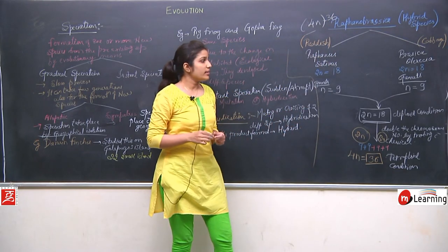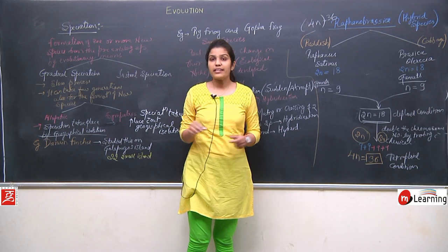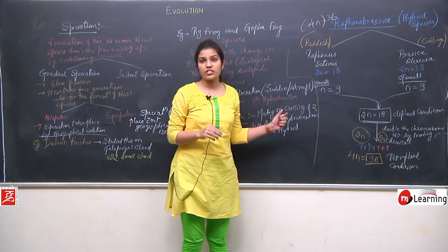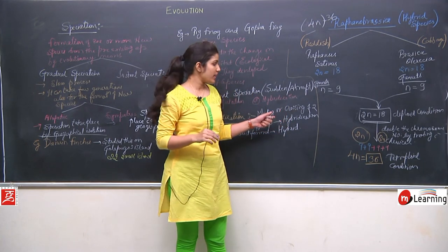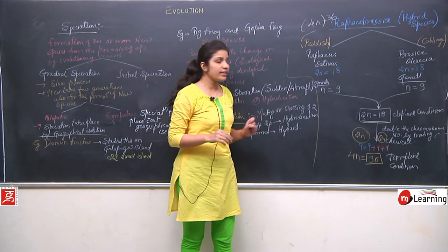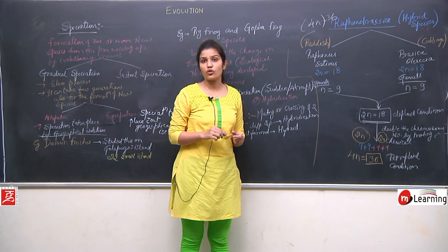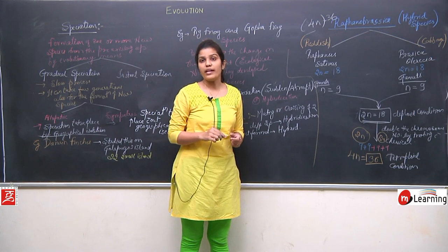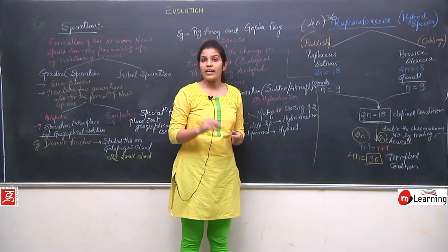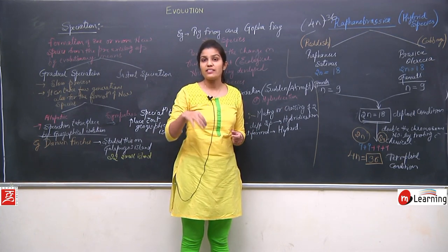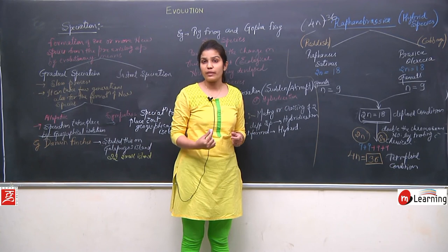The next example in instant speciation under hybridization is Triticale estivale, which is a hexaploid species. We will now see how this hexaploid species is formed.